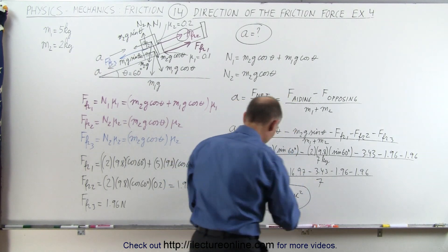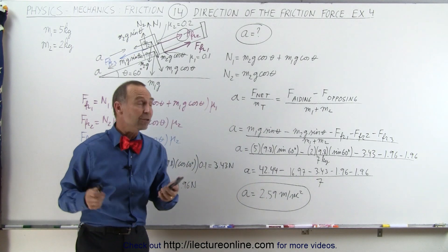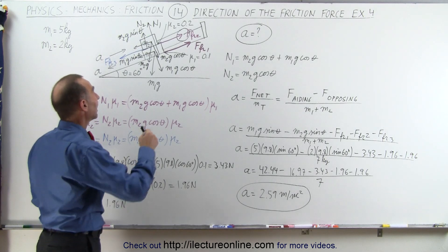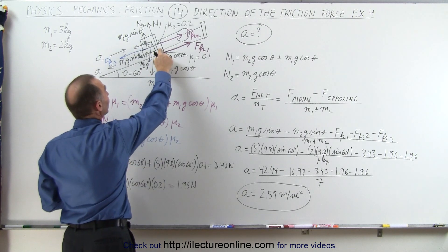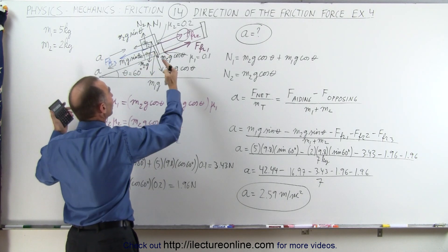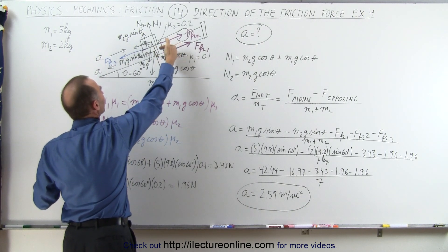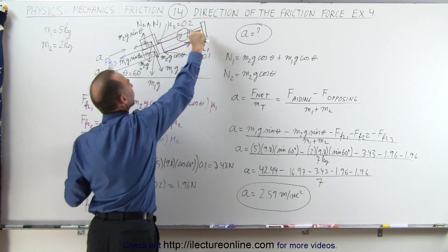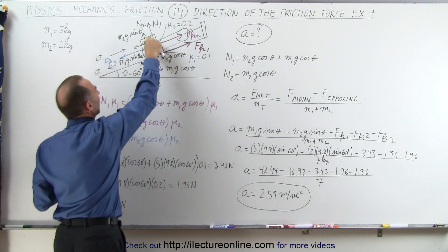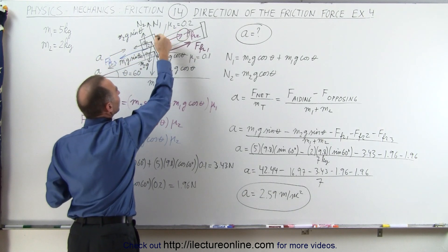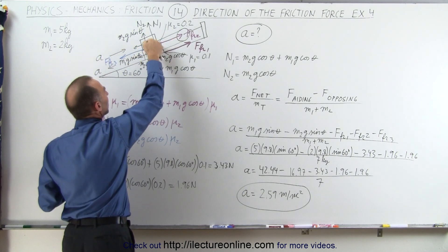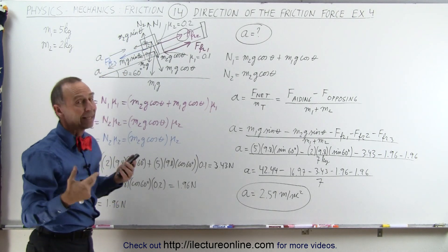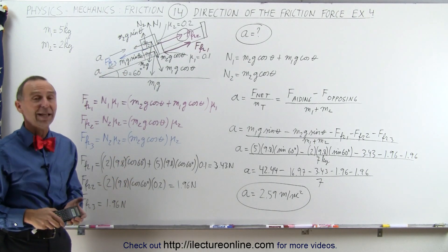That was quite a problem. The most difficult part is probably trying to find the direction of the friction forces. The best way to do that is to realize that if there was no friction at all, which way would m1 go? m1 would accelerate down the incline, so the friction forces on m1 will be in the opposite direction. For m2, m2 will accelerate up the incline, therefore the friction force between m1 and m2 on m2 will be in this direction. That's the best way to think about it, and that's how we get the right answer.